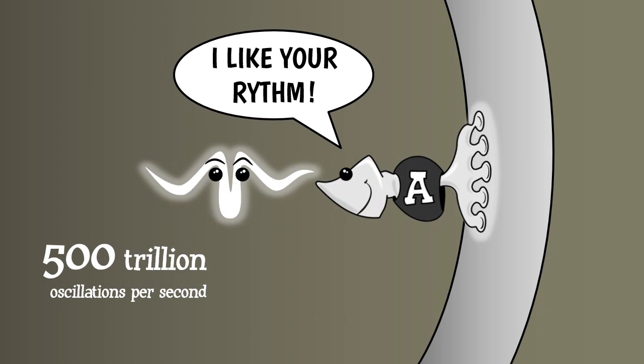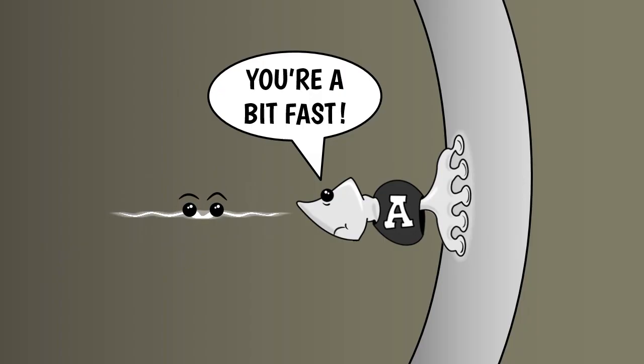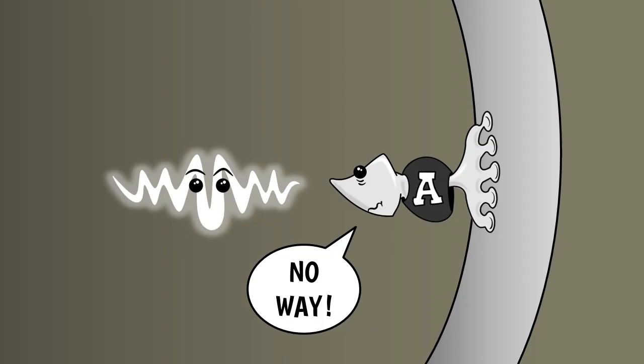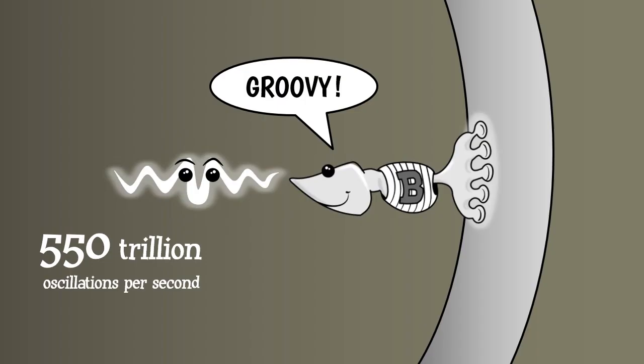Cones in team A react the most to photons that oscillate 500 trillion times per second. If the frequency is a little bit above or below this value, they still react, but less. And if the frequency is much larger or much smaller, they don't react at all. Cones in team B react the most to photons that oscillate 550 trillion times per second. And cones in team C prefer photons that oscillate 650 trillion times per second.